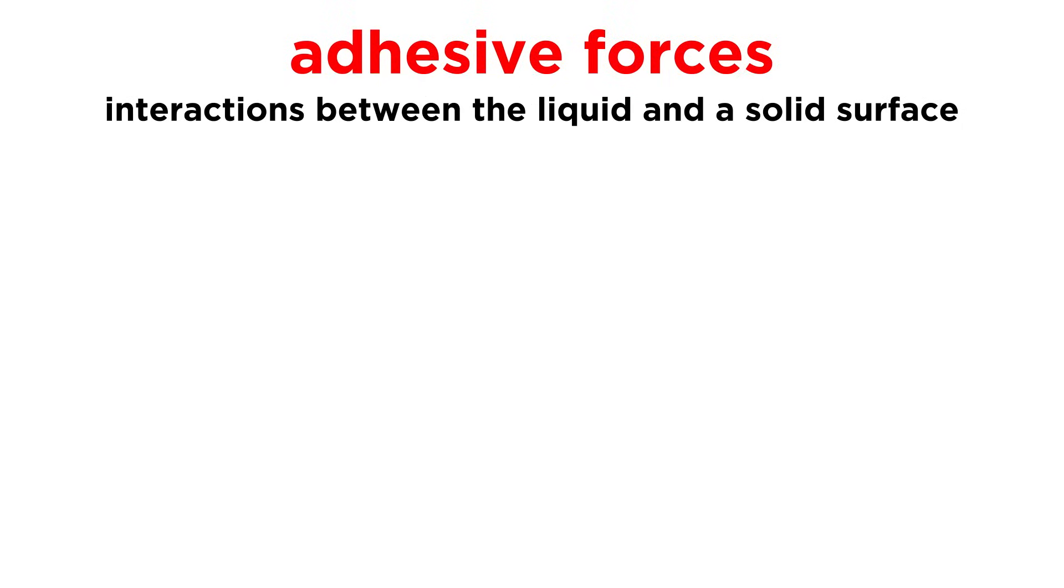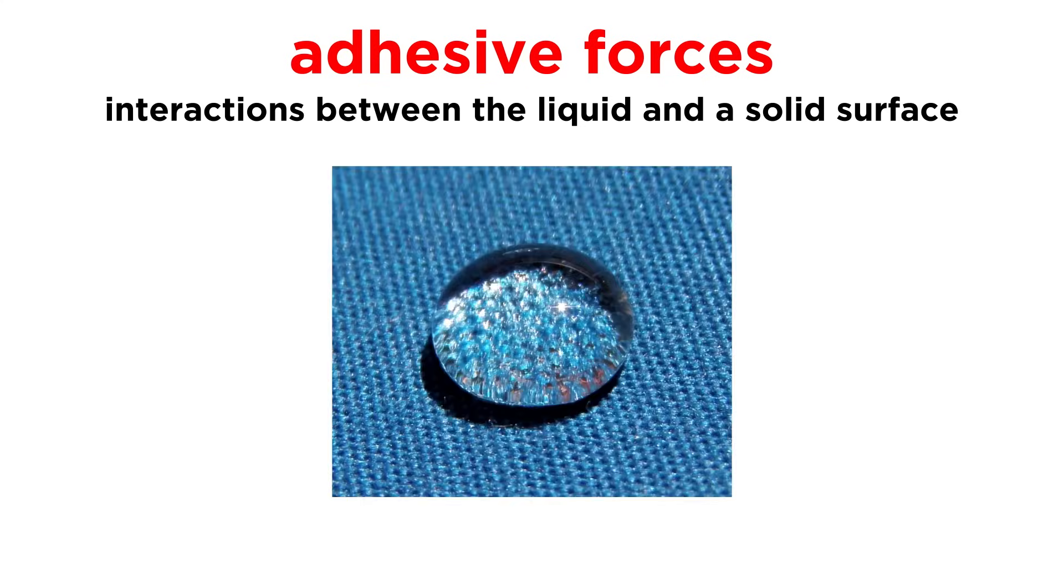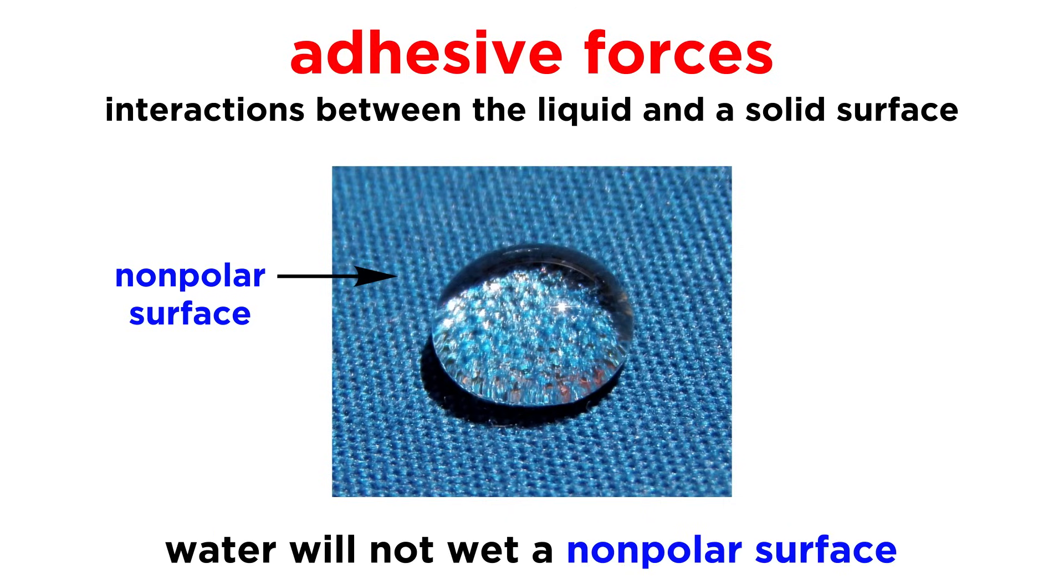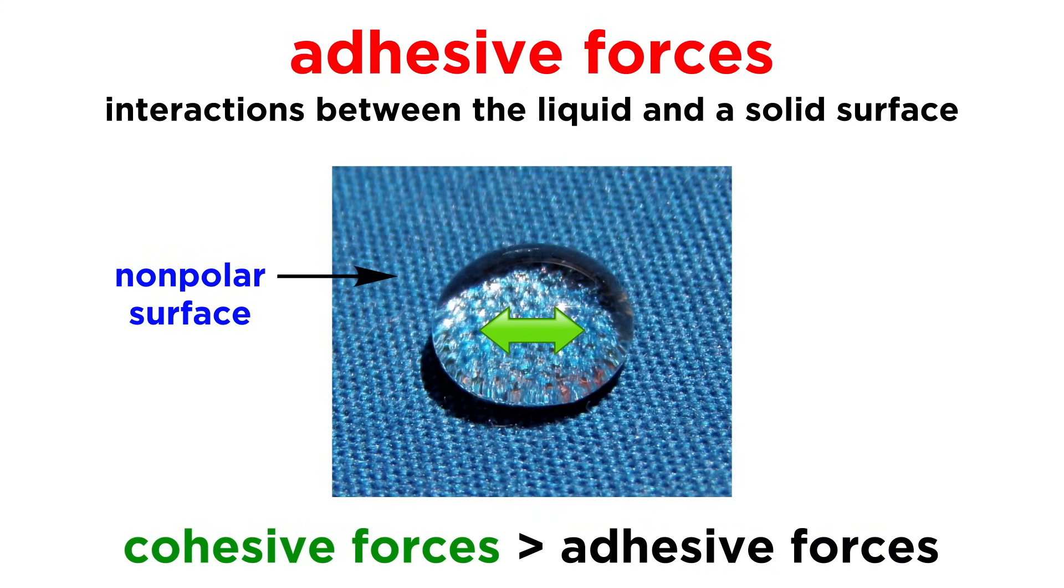The interactions between the molecules of a liquid and some solid surface are called adhesive forces. These describe the ability of a liquid to adhere to that surface. Take water for example. If we place a drop of water on a piece of plastic, or some other nonpolar surface that won't interact with water, the water will not wet the surface, and it will retain a spherical shape. This is because the cohesive forces, the hydrogen bonds occurring between the polar molecules inside the droplet, are stronger than the adhesive forces between the water and the nonpolar surface.